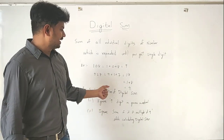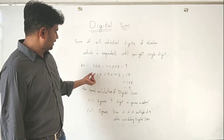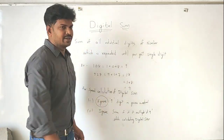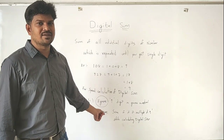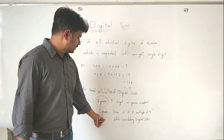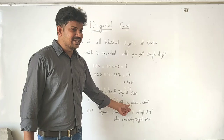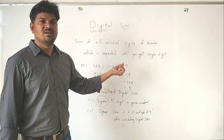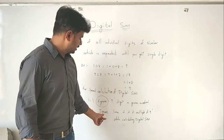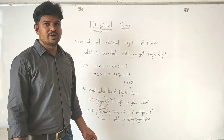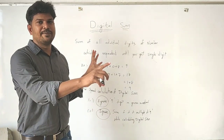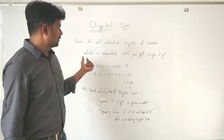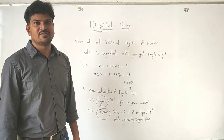We can apply some shortcuts for big numbers. For speedy calculation of digital sum: if there is a 9 included in the given number, just ignore it — don't consider it when adding. Next, if some digits in the given number sum to 9 or a multiple of 9, then also ignore them. That makes for speedy calculation of digital sum.